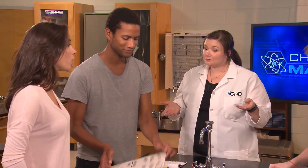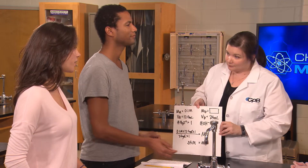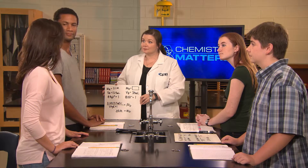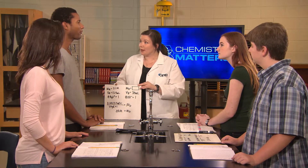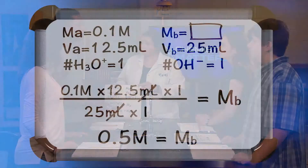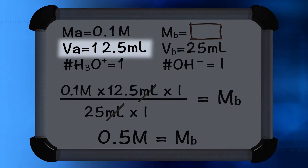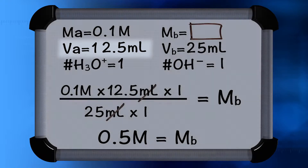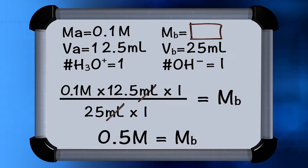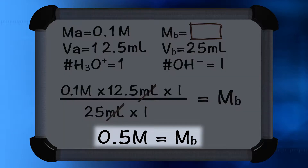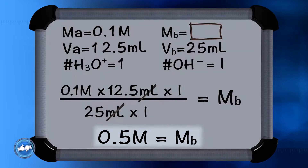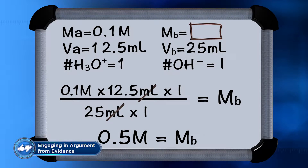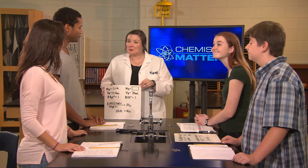How about you two? Well, we only used 12.5 milliliters of the acidic titrant before our indicator changed color. So what were you able to calculate from that? We did the calculations just like they did, only we plugged in 12.5 for the volume of the acid that we used. That gave us an answer for the concentration of the sodium hydroxide base of 0.05 molar. And that makes sense — if it took us exactly half the standardized acid to titrate the same volume of base as it took them, our unknown base concentration should be about half of theirs. And it is. Well done, everyone.